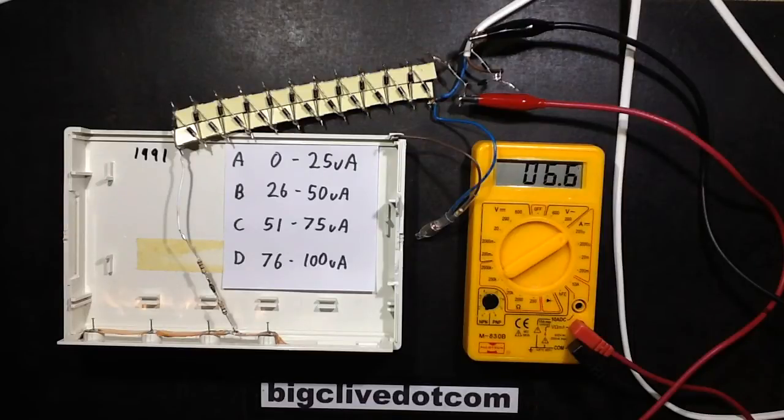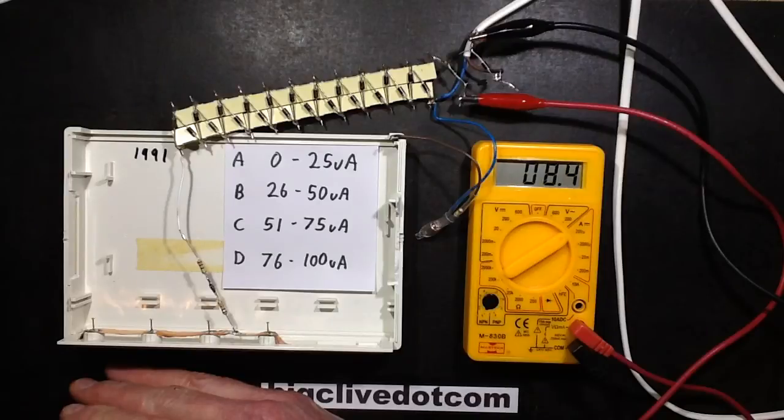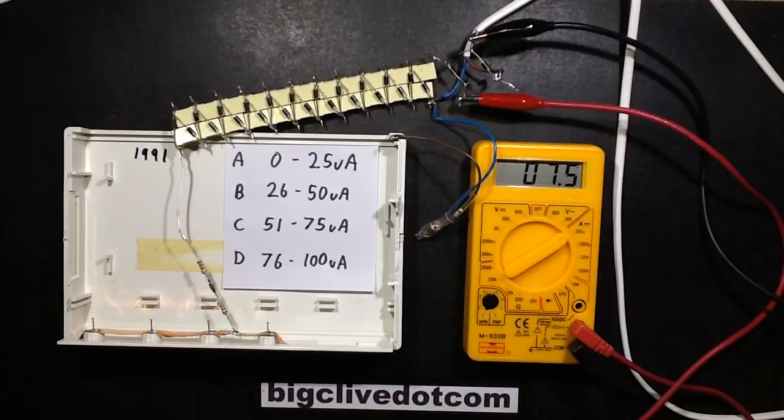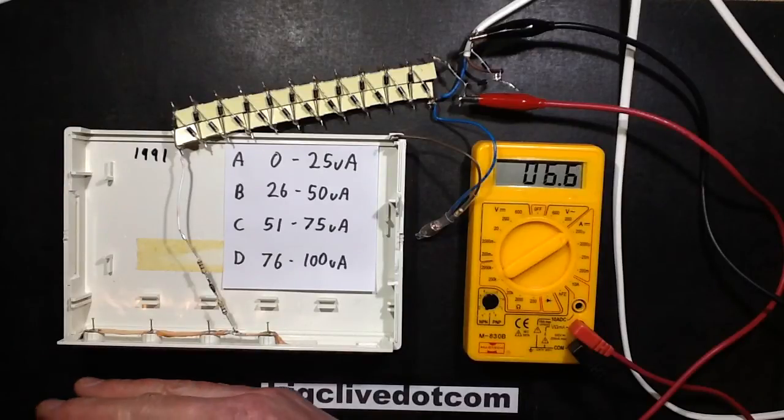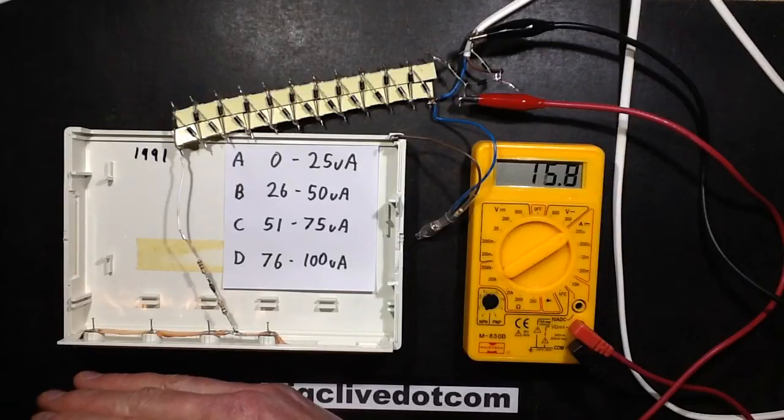If you put your hand in front of the ionizer, it peaks briefly while it charges your body up. If I actually ground my body so it provides a good path for the ionized air and put my hand in front, it goes up to about 15 microamps. I can feel the draft of air blowing against my hand from the needles.